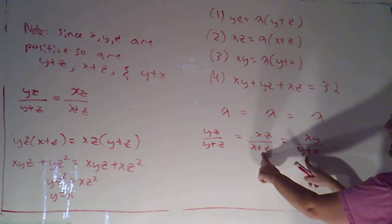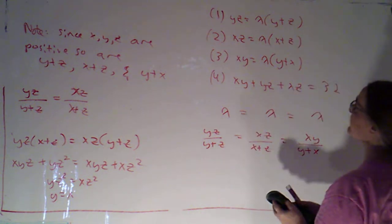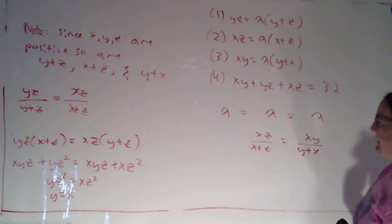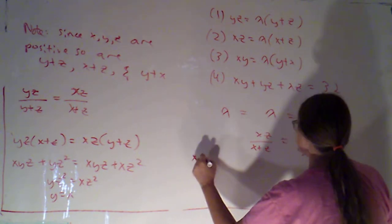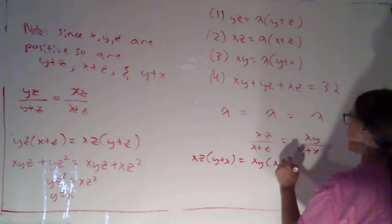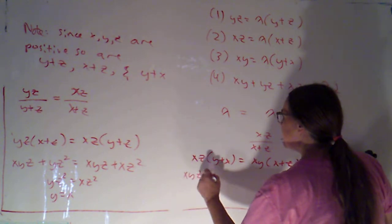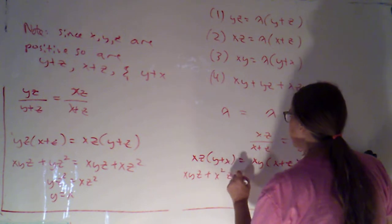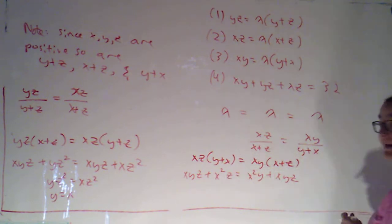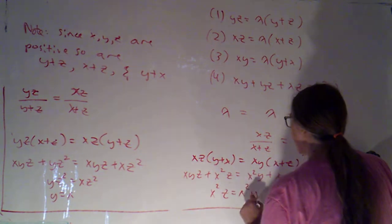Now, I'm just going to work with this last pairing that xz over x plus z equals xy over y plus x. I think I've got enough room to do that here. If I cross-multiply, I'll get xz times y plus x equals xy times x plus z. If I distribute, I get xyz plus x squared z equals x squared y plus xyz. I can subtract the xyz from both sides, so x squared z equals x squared y.